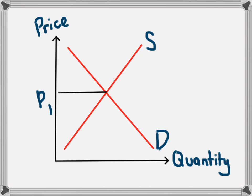At P1, the quantity supplied and the quantity demanded will be the same at Q1.